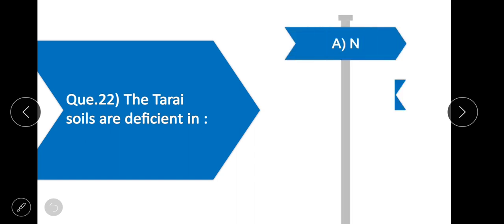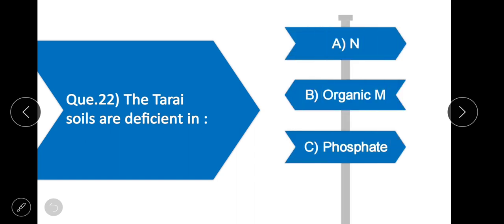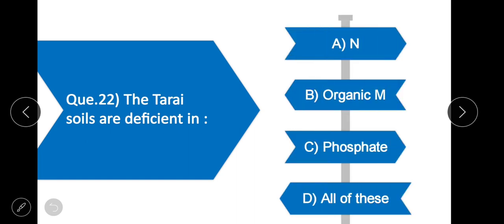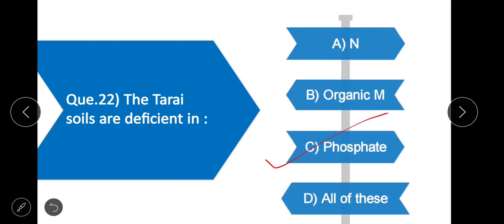Question 22: Tari soils are deficient in — option C is correct — phosphate. Tari soils are deficient in phosphate but rich in nitrogen and organic matter.